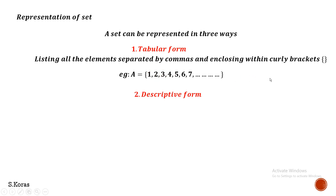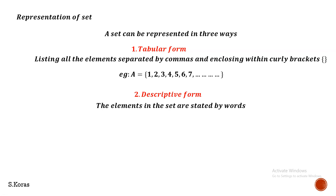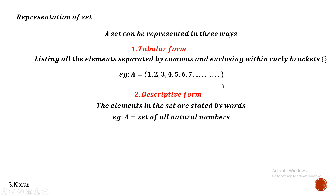The second form is descriptive form, where we represent the set using words. For example, the set {1, 2, 3, 4, 5, 6, 7, ...} can be written as 'Set of all natural numbers.' If it were only 1 to 7, we would write 'Set of natural numbers from 1 to 7.'